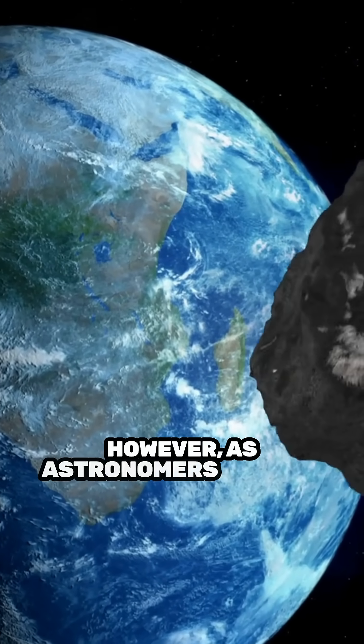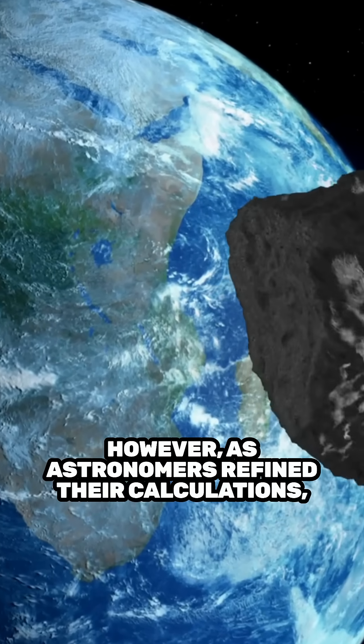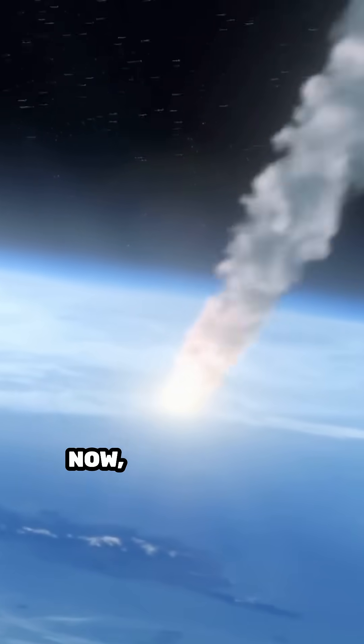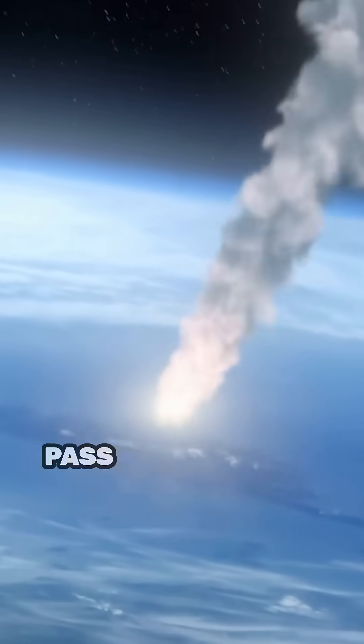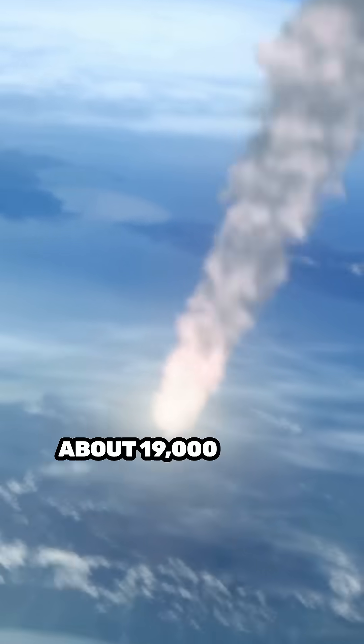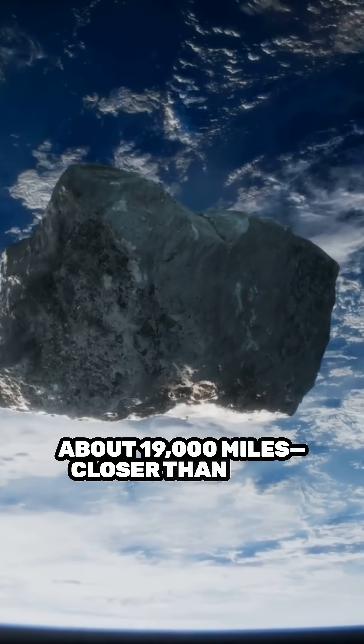However, as astronomers refined their calculations, the reality became much less alarming. Now, we know that Apophis will safely pass by our planet at a distance of about 19,000 miles, closer than some satellites.